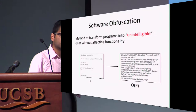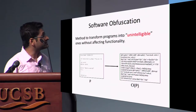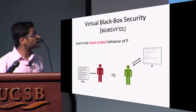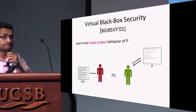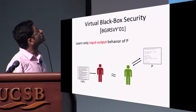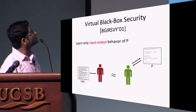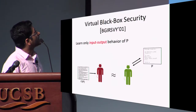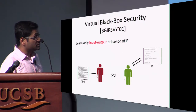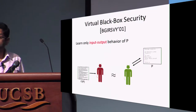Defining what it means to hide the secrets turns out to be rather tricky. One of the first efforts to define this formally was done by Barak et al., who defined this very natural notion of obfuscation, which they call virtual black box obfuscation. This notion roughly says that an obfuscated version of the program leaks only whatever could be learned from the input-output behavior of the program P.